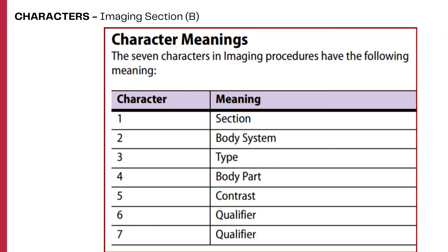The third character defines the type of imaging procedure, such as an MRI or an ultrasound. The fourth character defines the body part, with different body part values available for each body system. The fifth character specifies the type of contrast used, such as high osmolar contrast, low osmolar contrast, or other type of contrast.